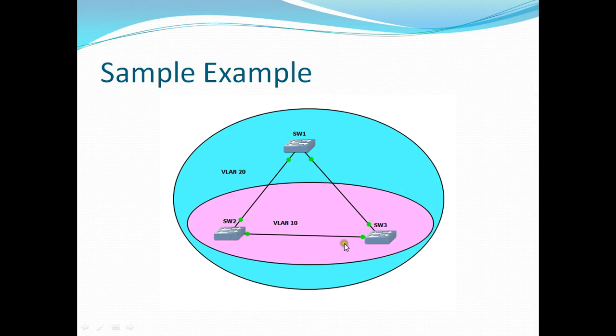Then what about the status of these two interfaces? It will check the MAC ID. If this MAC ID is lower and this MAC ID is higher, automatically switch 2 will become the root bridge. So switch 2 interface will become the designated port. Automatically this will become an alternate port.